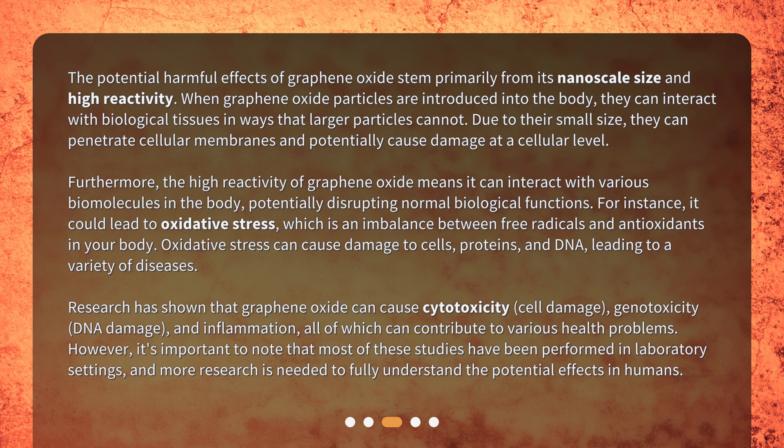For instance, it could lead to oxidative stress, which is an imbalance between free radicals and antioxidants in your body. Oxidative stress can cause damage to cells, proteins, and DNA, leading to a variety of diseases. Research has shown that graphene oxide can cause cytotoxicity (cell damage), genotoxicity (DNA damage), and inflammation, all of which can contribute to various health problems.